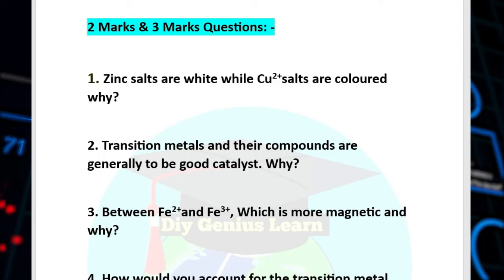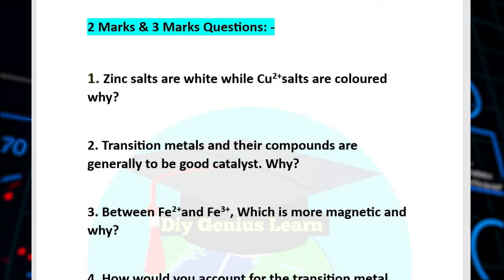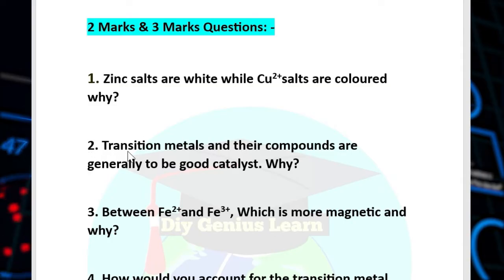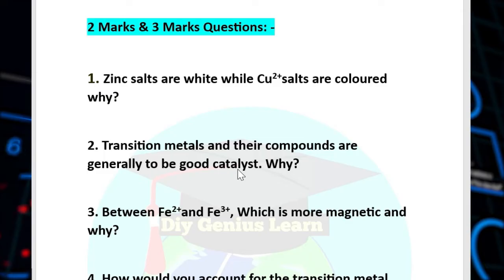Zinc is white, copper and iron are coloured — iron is red. Why are transition metal compounds coloured? This is question number 1. Question number 2: Transition compounds are generally good catalysts. Why?